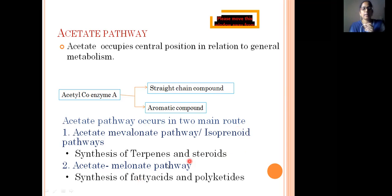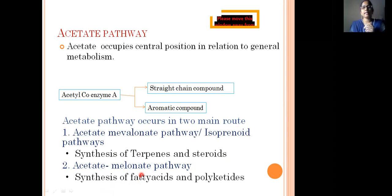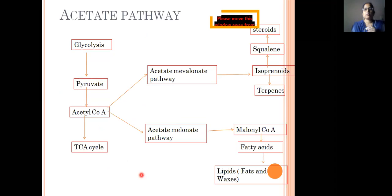The second route is the acetate-malonate pathway. In this pathway, both malonyl-CoA and acyl carrier proteins (ACP) are involved. Both acetyl-ACP and malonyl-ACP participate in the formation of fatty acids and polyketides, which is the main role of the acetate-malonate pathway.